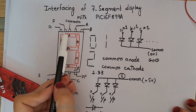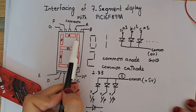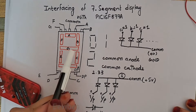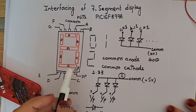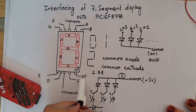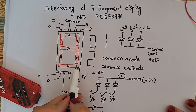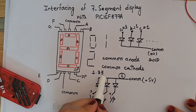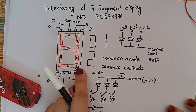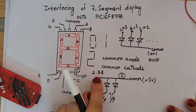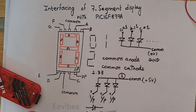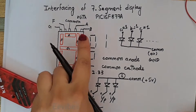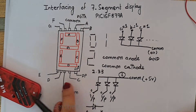In order to display zero, we need to turn on A, B, C, D, E, and F while G remains off. There is also another pin on the seven segment display used for decimal point representation — if you need to represent a value like 2.33, this LED can be turned on for displaying fractional values.